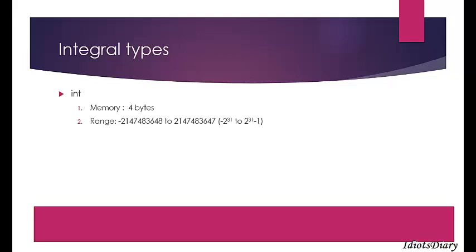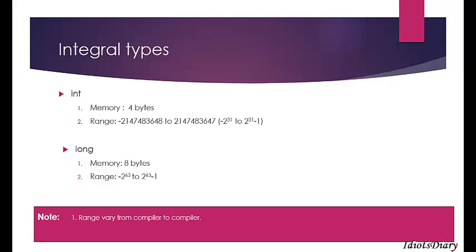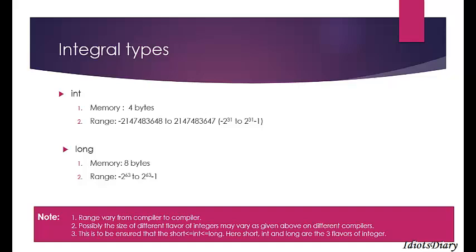The first scalar data type is integer. To create an integer variable, use the keyword 'int', which takes 4 bytes of memory and has a range of -2^31 to 2^31 - 1. If you need more range, use 'long', which takes 8 bytes with a range of -2^63 to 2^63 - 1. Note that the range of different data types varies from compiler to compiler. It is ensured that short is always less than or equal to int, and int is always less than or equal to long. Short, int, and long are three flavors of integers.